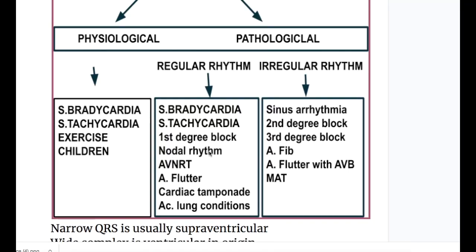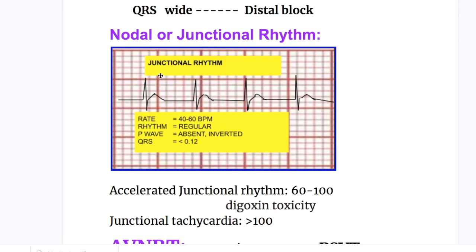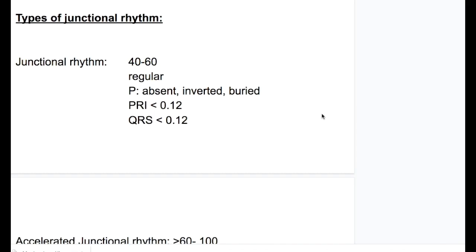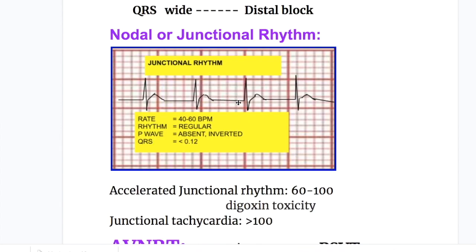Next is nodal or junctional rhythm. In junctional rhythm the rate is 40 to 60 beats per minute, the rhythm is regular, the P wave is absent or inverted, and QRS is less than 0.12 seconds. So the features are: absent P wave, narrow QRS complex, rate of 40 to 60 beats per minute with regular rhythm.